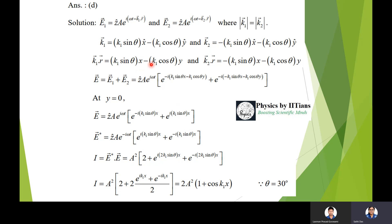Similarly, k2·r = −k1·sinθ · x − k1·cosθ · y. Now we superpose the two fields: E = E1 + E2, which gives z-cap · A · e^(iωt) · [e^(−i(k1·sinθ · x − k1·cosθ · y)) + e^(−i(−k1·sinθ · x − k1·cosθ · y))].